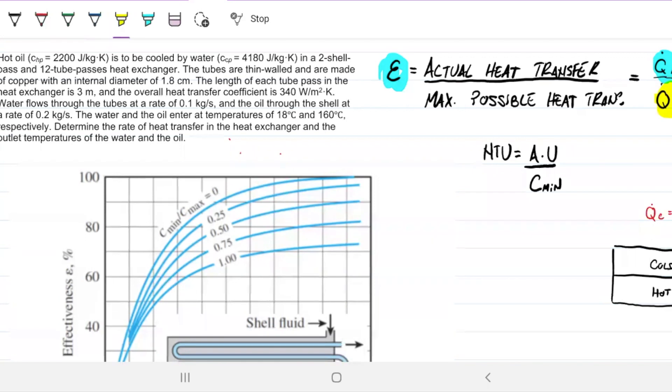Notice they're giving you C sub P already, so no doubts about what that is. It's two shells and 12 tubes, and the tubes have an internal diameter of 1.8 centimeters. So the radius of the tube is 0.9 centimeters, which is 9 times 10 to the minus 3 meters.